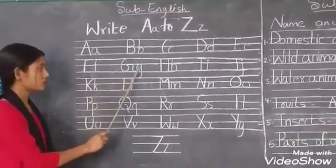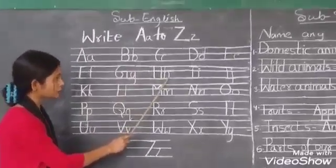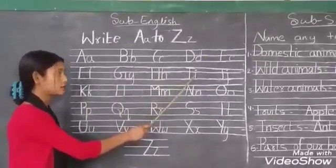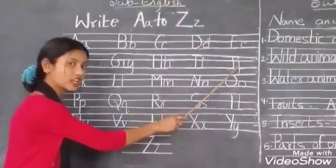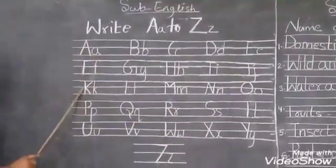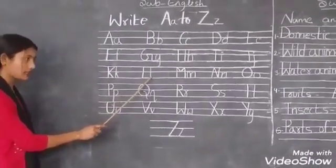Capital G, small g. Capital H, small h. Capital I, small i. Capital J, small j. Capital K, small k. Capital L, small l.